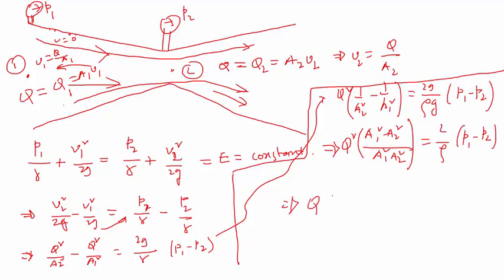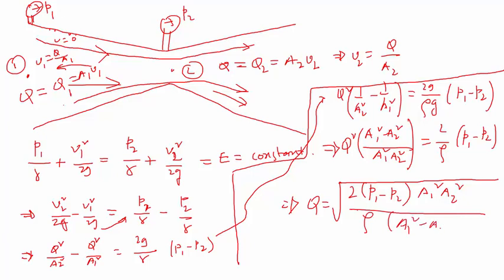Now I can write Q, which will be A1 A2 square root of 2 P1 minus P2 divided by rho A1 squared minus A2 squared, like that.